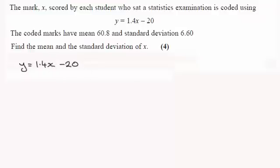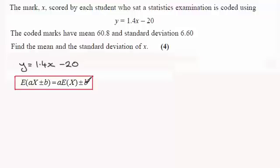In order to do this, what you've got to remember for the mean is this result here: that if you take the expected value of something of the form AX plus or minus B, where A and B are constants, it's equal to A times E(X) plus or minus B. So remember E(X) is the mean of X.